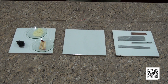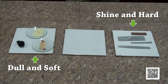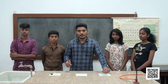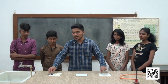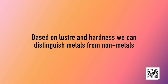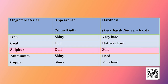Students have categorized the substances into two different groups — identifying substances by their shininess and hardness on one hand, and their softness and dullness on the other. The conclusion from this categorization is that substances which are shiny and hard are classified as metals, while substances that are soft and dull are categorized as non-metals. Iron appears shiny and very hard. Coal appears dull and not very hard. Sulphur appears dull and soft. Aluminium is shiny and hard. Copper is shiny and very hard.